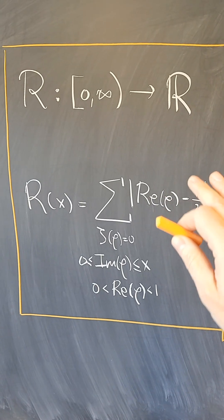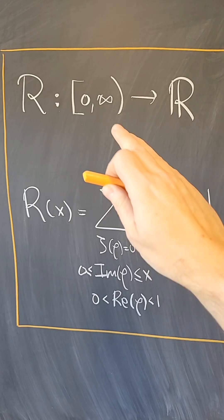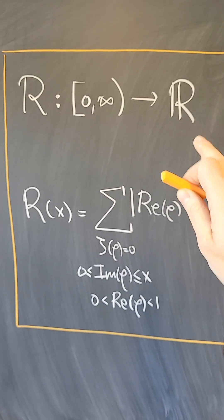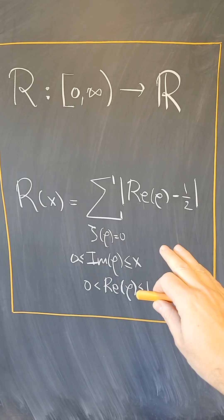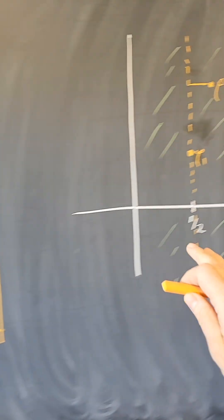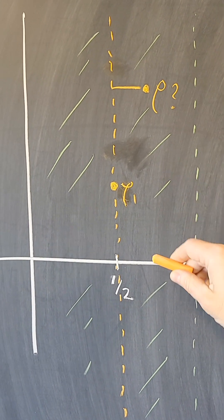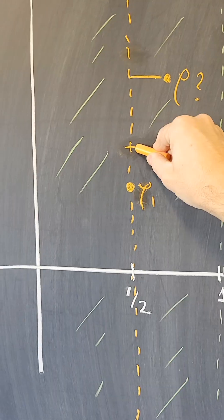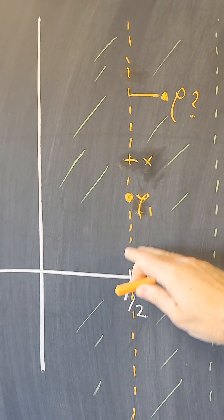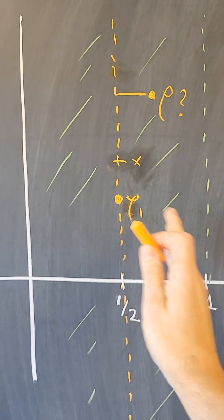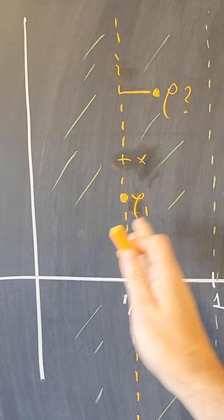And to do so, I'm going to define a function which is the key to the proof. This function is a function from non-negative reals to the real numbers that works as follows. What we're going to do is go up by imaginary part. And at any x, what I'm going to do is add up all the deviations of zeros in the critical strip up to here,